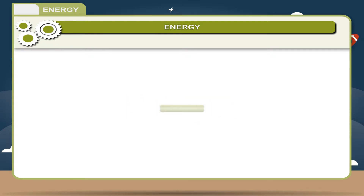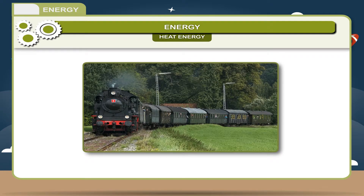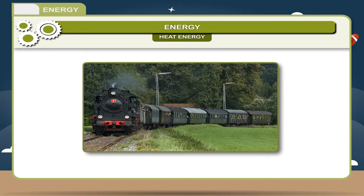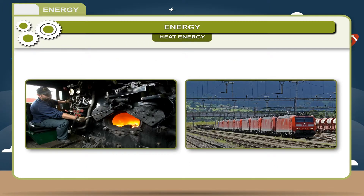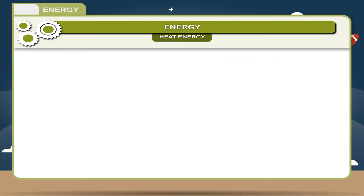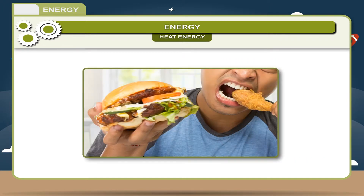Heat energy. Heat is a form of energy, also called thermal energy. A steam engine works with the help of heat energy to pull a heavy train. Heat energy can be produced in many ways — by burning fuels or by passing electricity through different appliances. The food we eat is digested and it results in the liberation of heat energy.